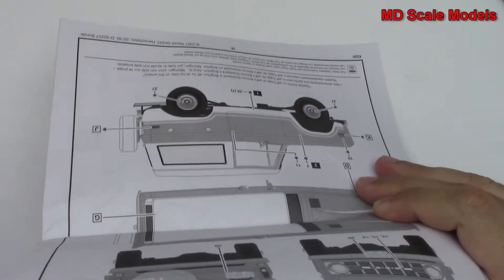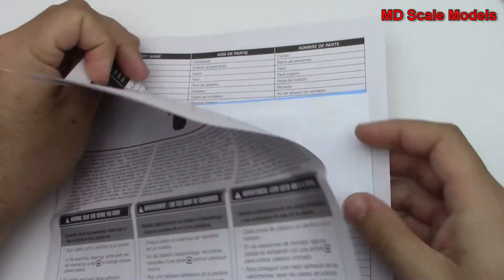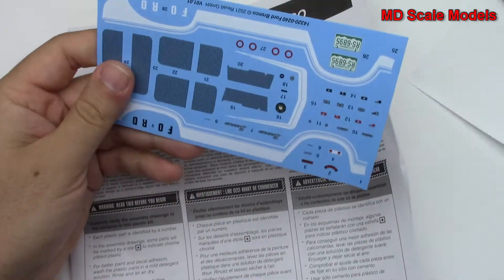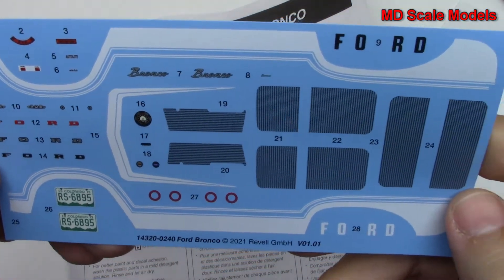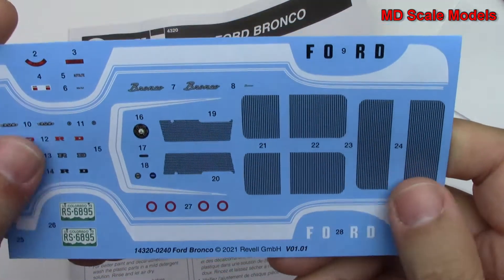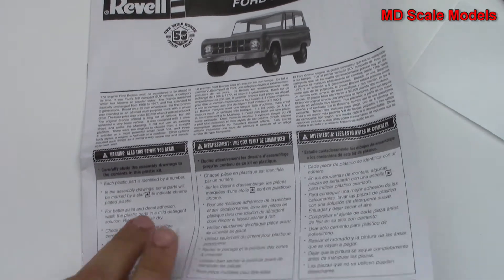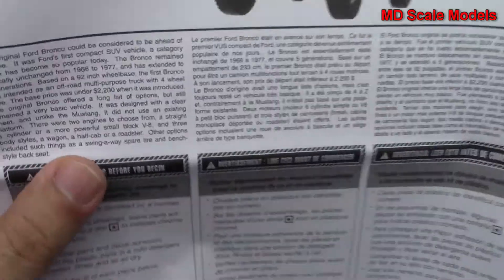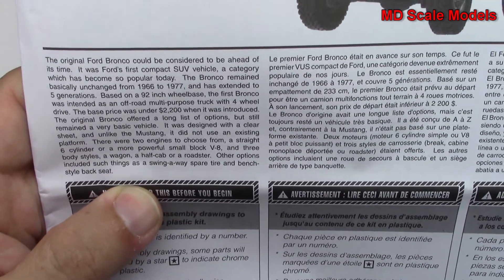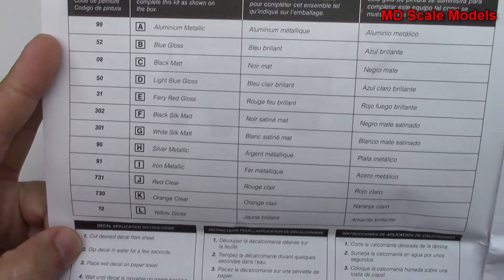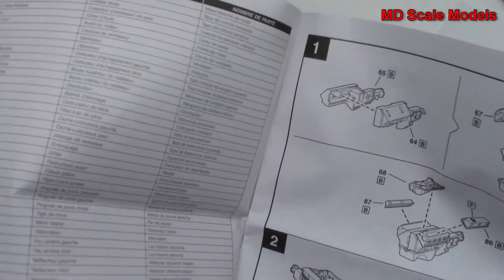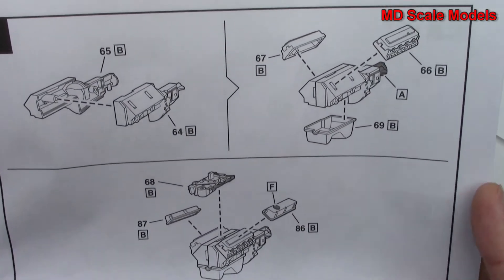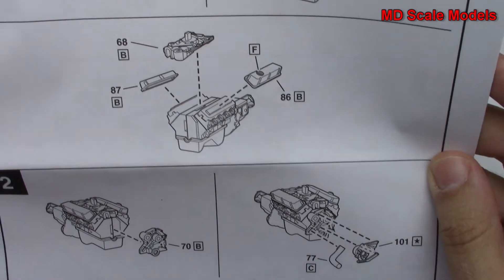Let's have a look at our instructions and decals. There are the decals and very nicely printed. Some details there about the car. Those are the colors needed. We start off here with the engine block and build the engine.